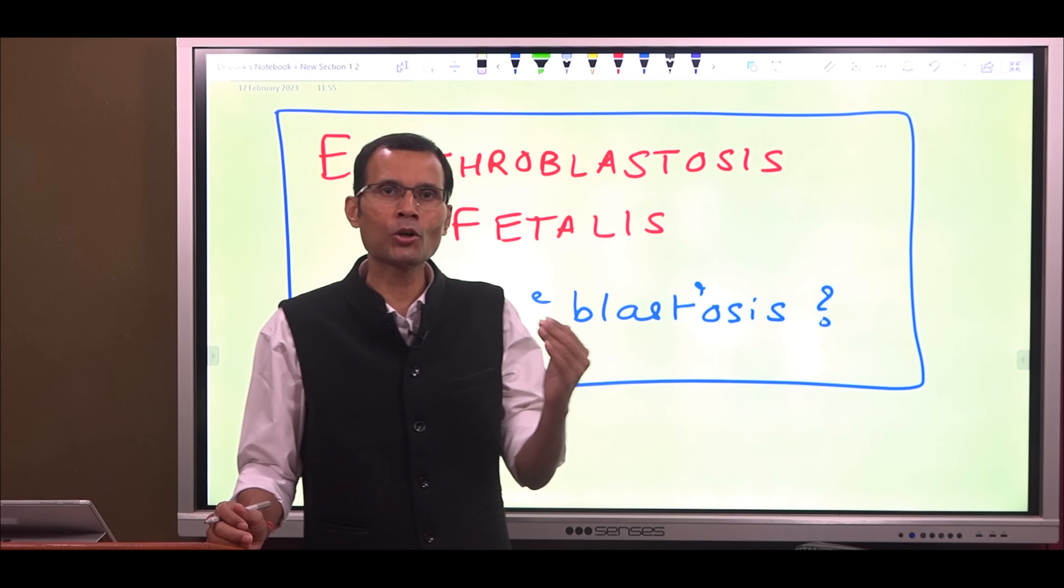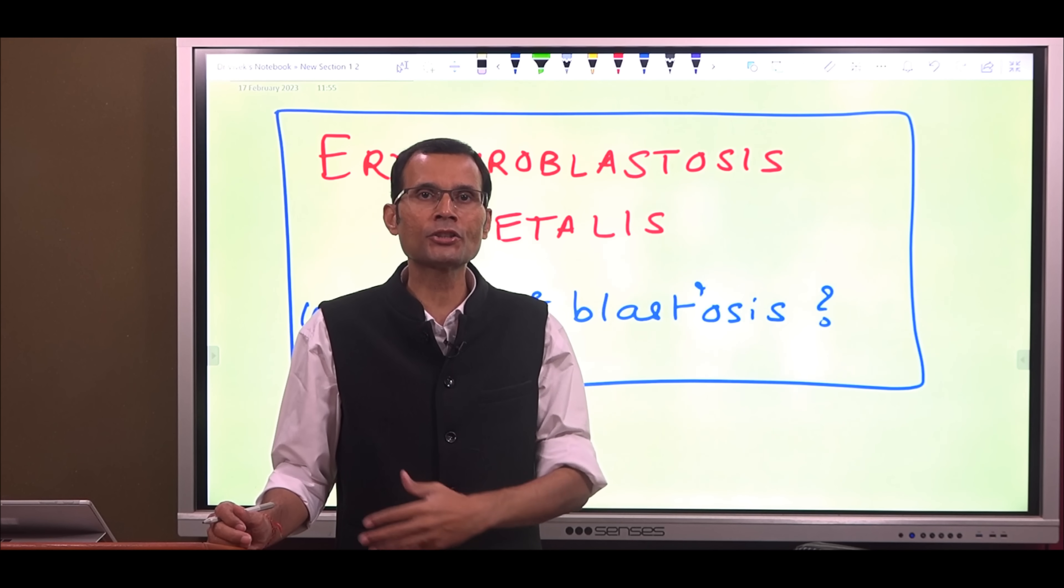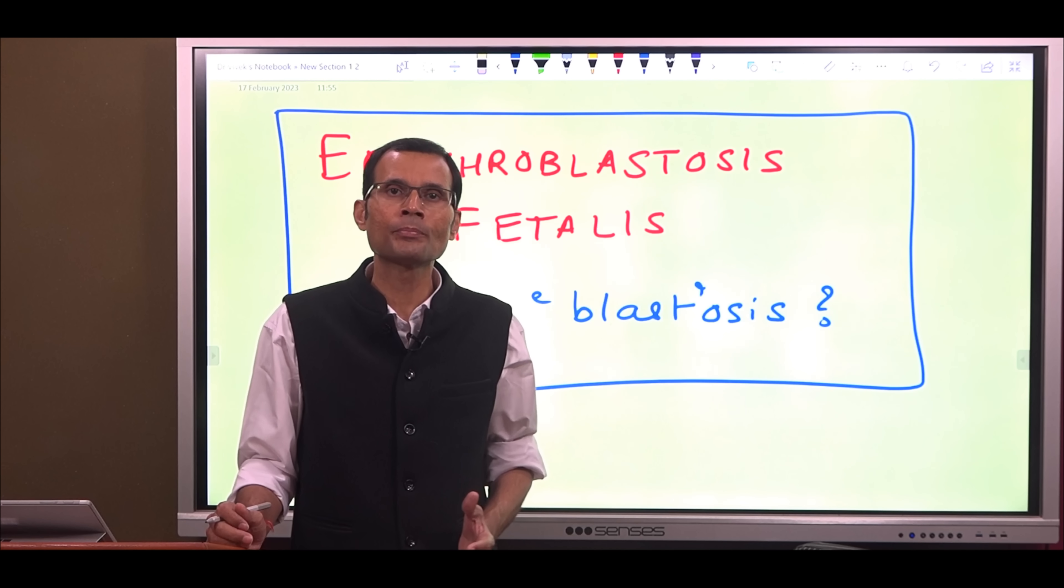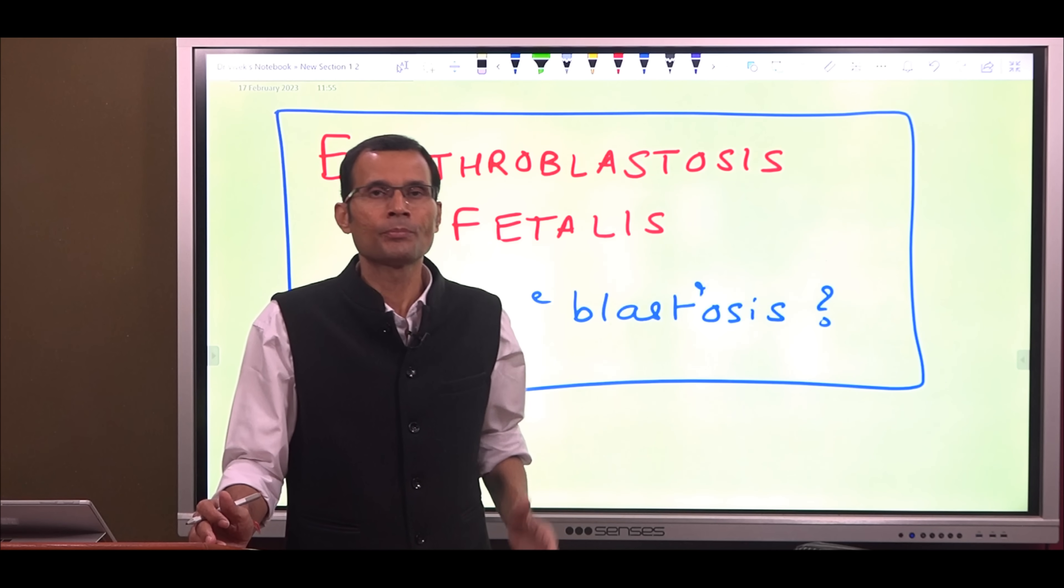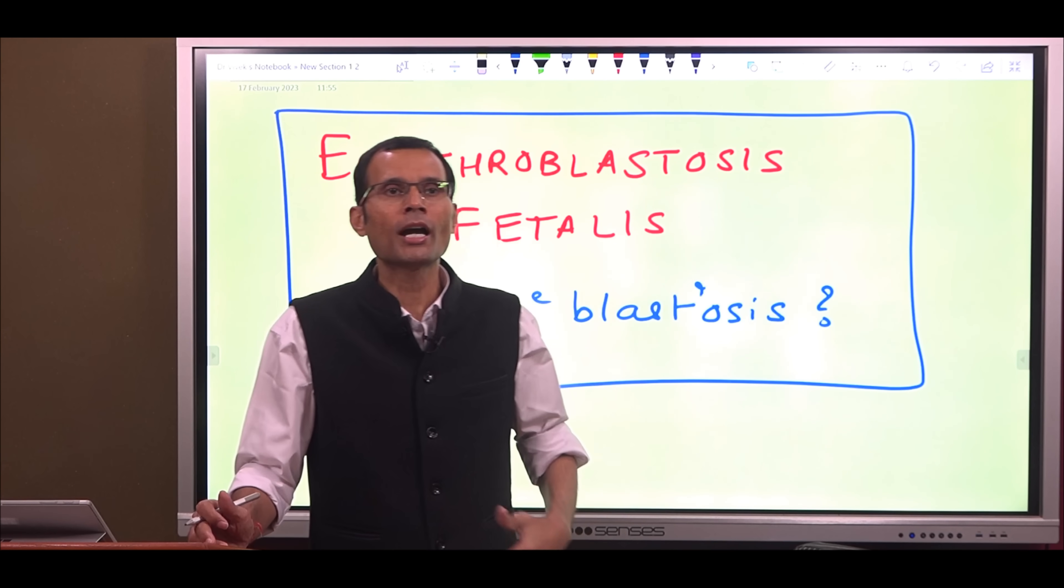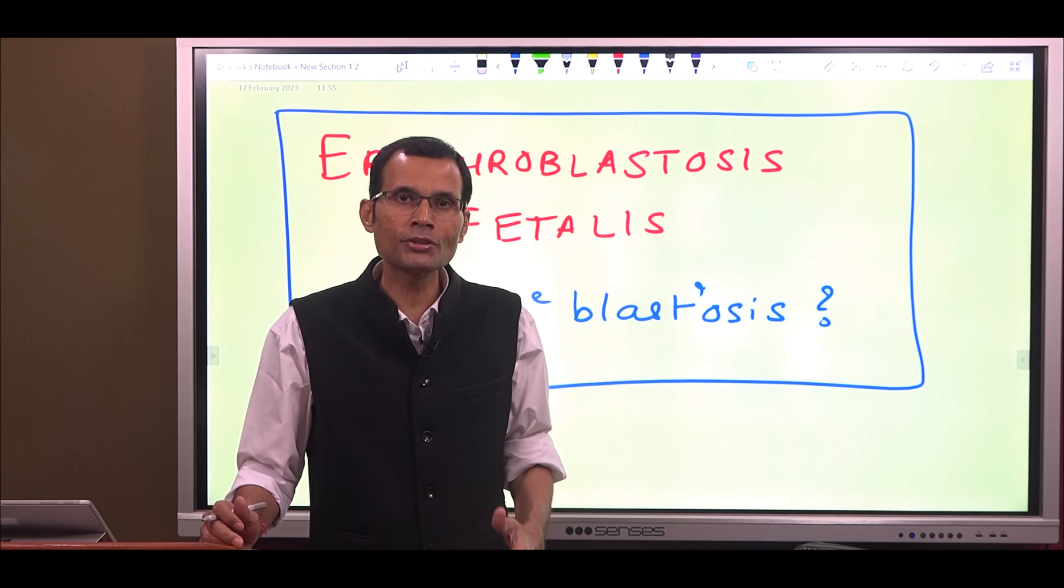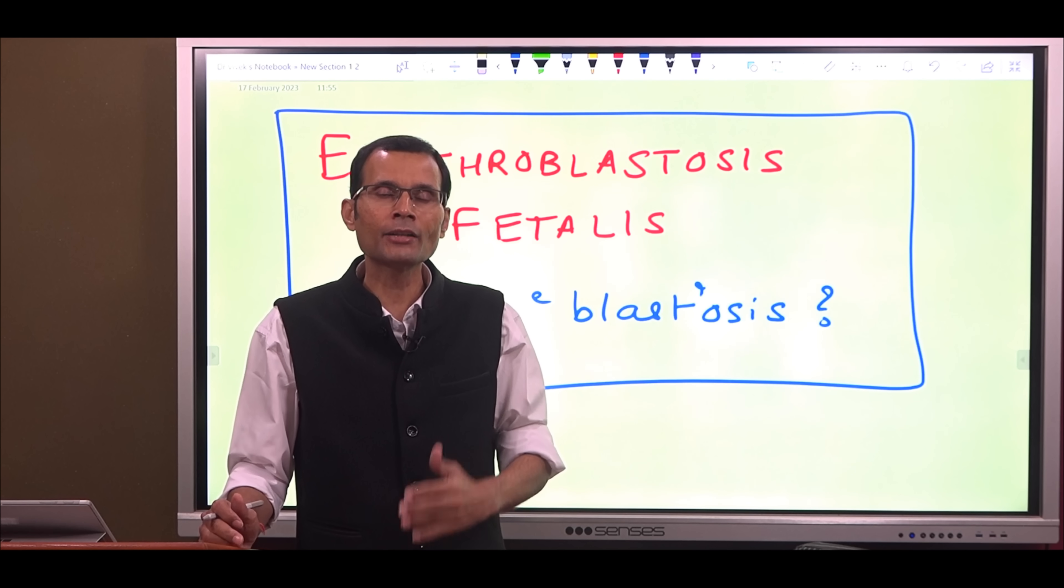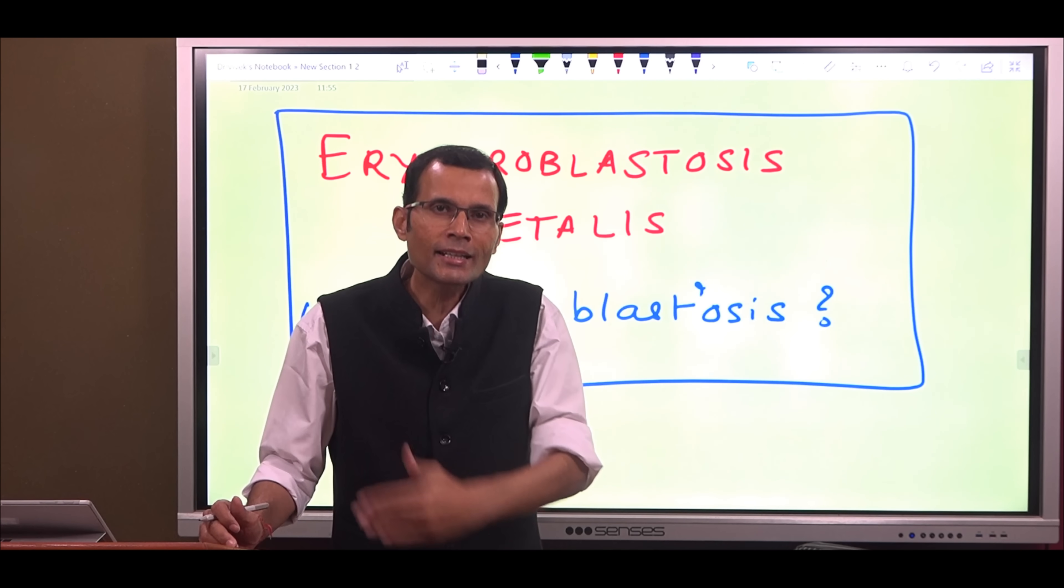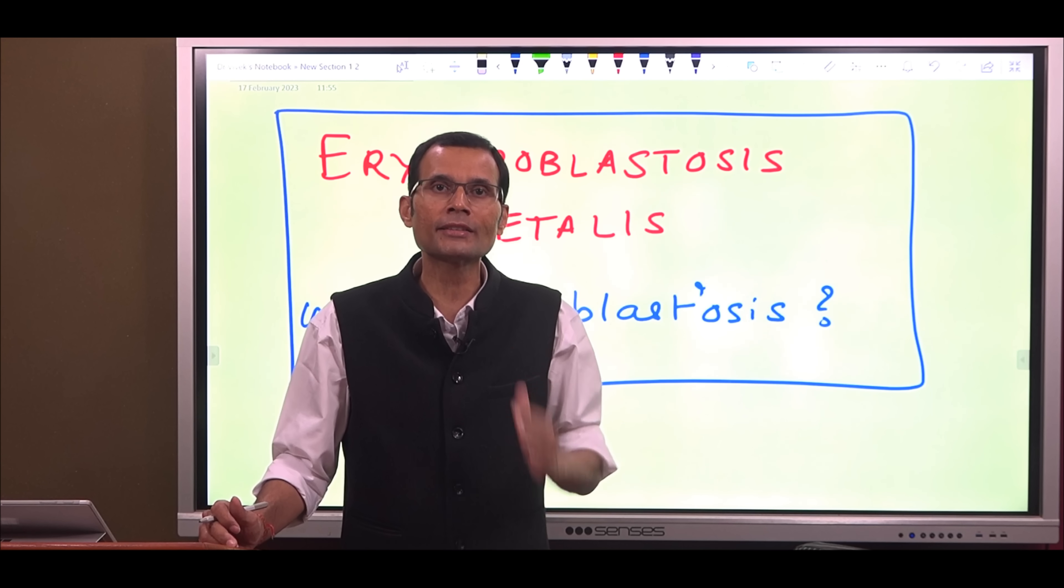What happens is because of this agglutination reaction in the fetus, RBCs are destroyed in large numbers, and because the RBCs are destroyed in large numbers, in reaction to that the fetal bone marrow and the RBC producing organs will produce RBCs in large numbers rapidly, and those RBCs will be released into the circulation in immature nucleated precursor stages.